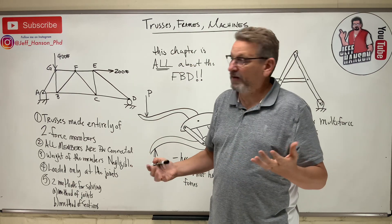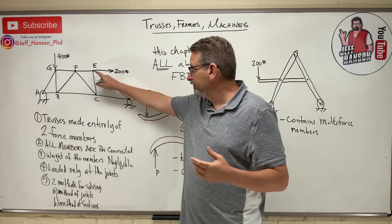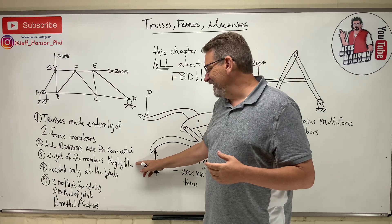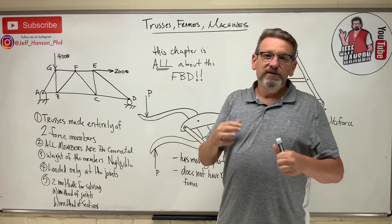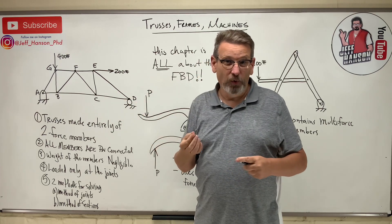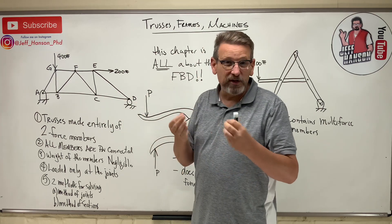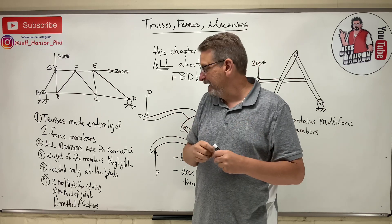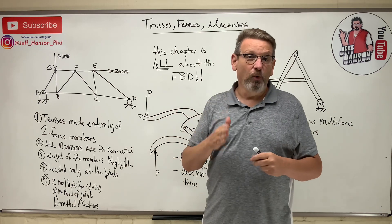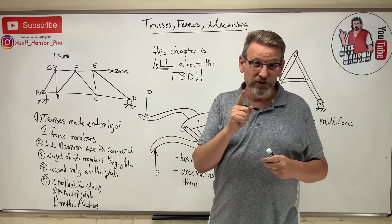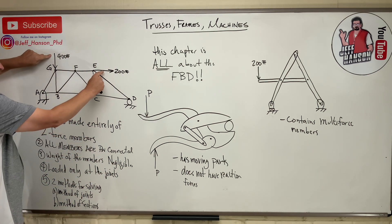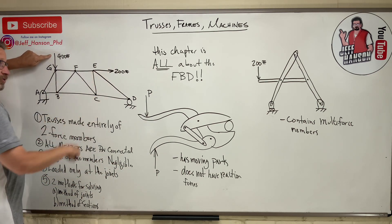All members are pin connected, so trusses are completely pin connected. They're not welded at these joints, they're pinned at these joints. The weight of the members is negligible, so for the weight of the truss compared to how much weight it can hold, the weight of the members in the calculation is really a negligible amount. It doesn't affect the answer. And then the last one, number four: trusses are always, always, always loaded at the joints. You'll notice, like here I have a 400 and a 200, but those loads are attached to the joint.